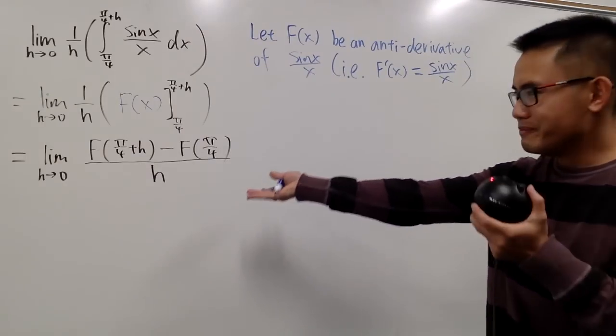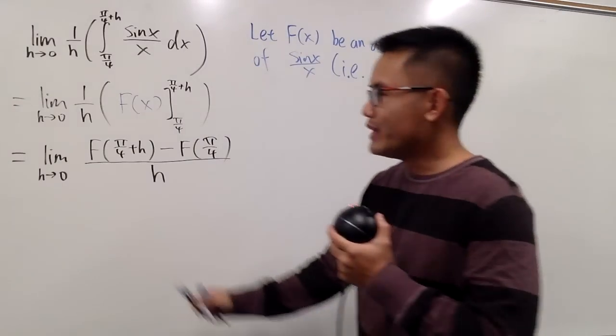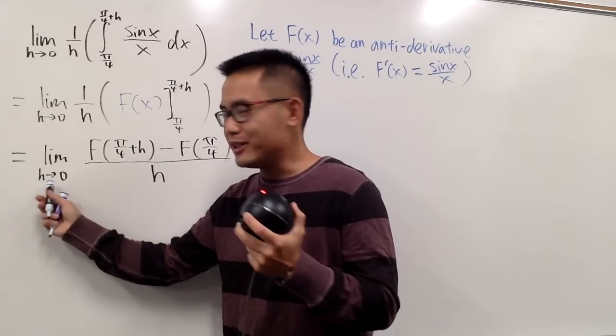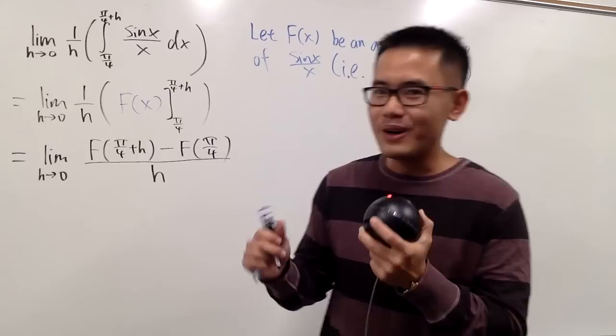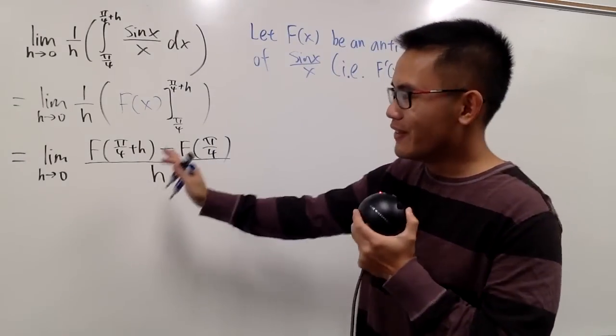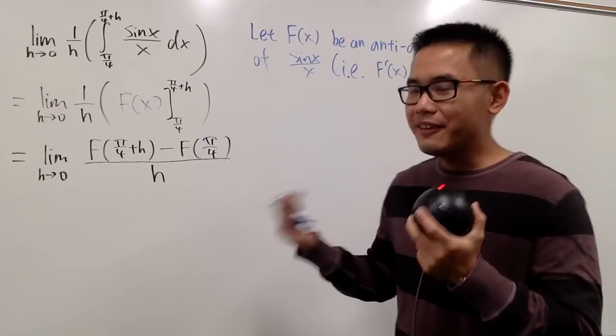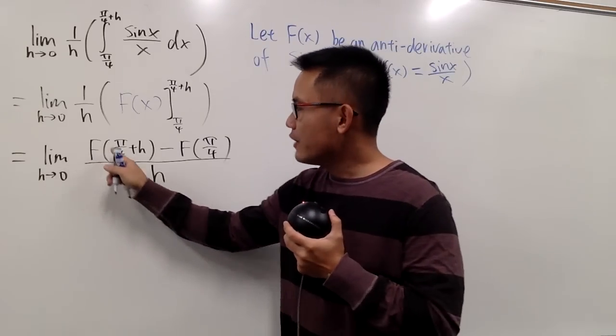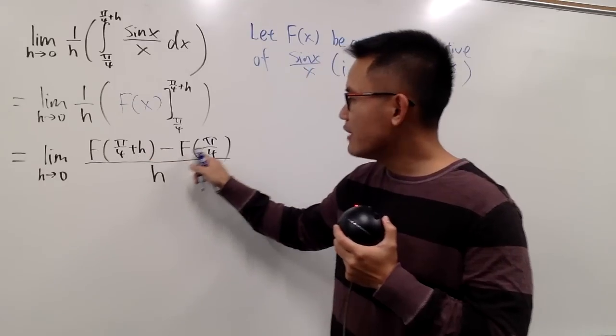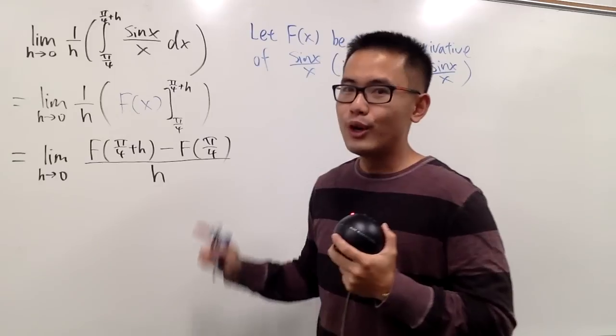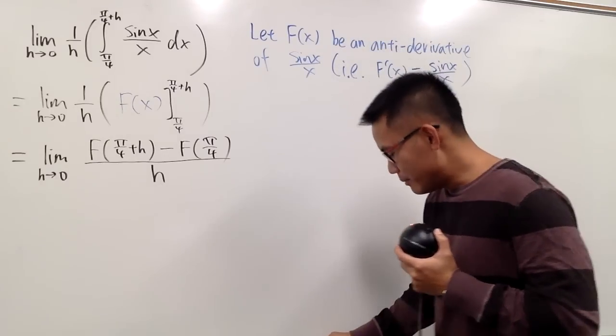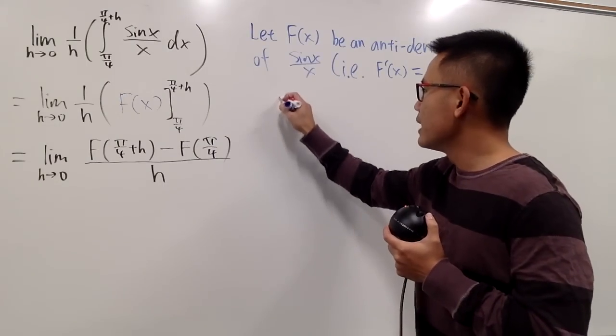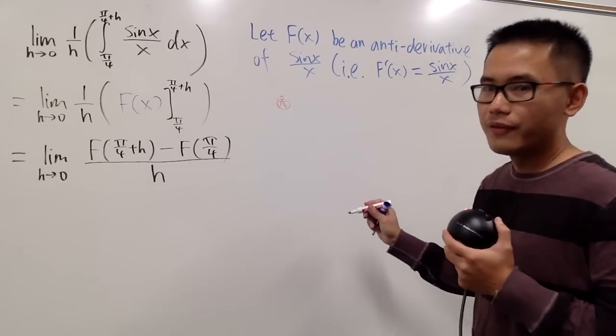And now, what does this look like? We have the limit as h approaching 0. Whenever you are seeing h, you should recall, you should be aware, hey, that's a definition of derivative coming up. And in fact, we have that. Check this out. This is F(π/4 + h) minus F(π/4) over h. What does this mean?